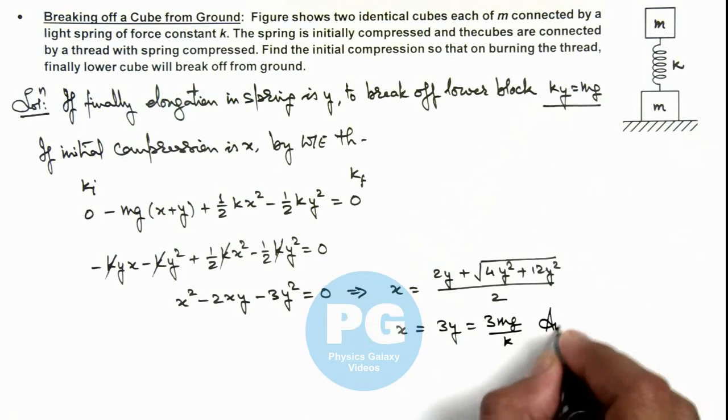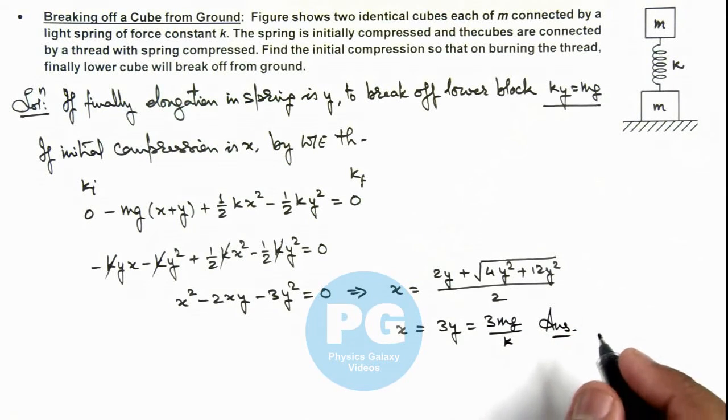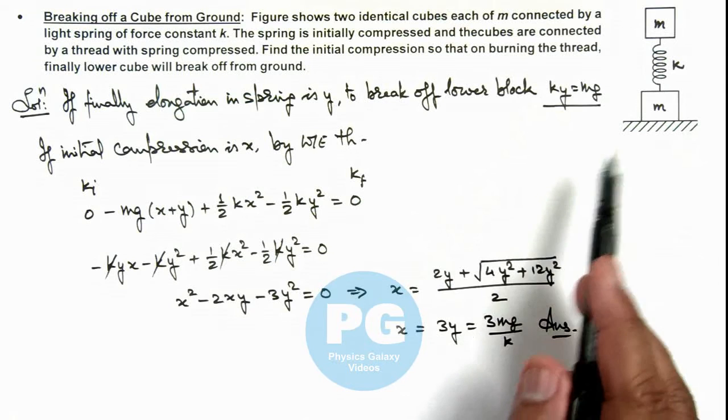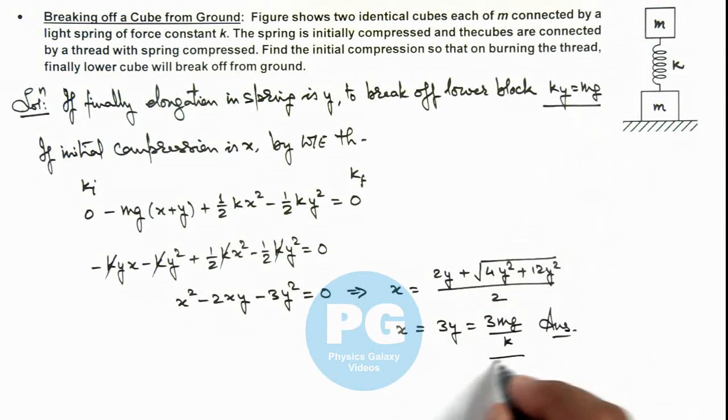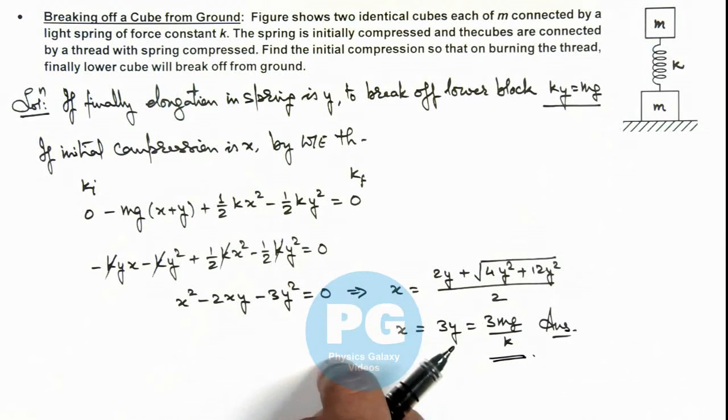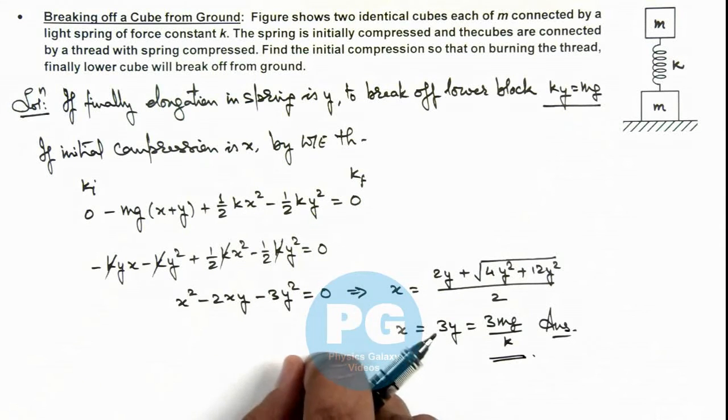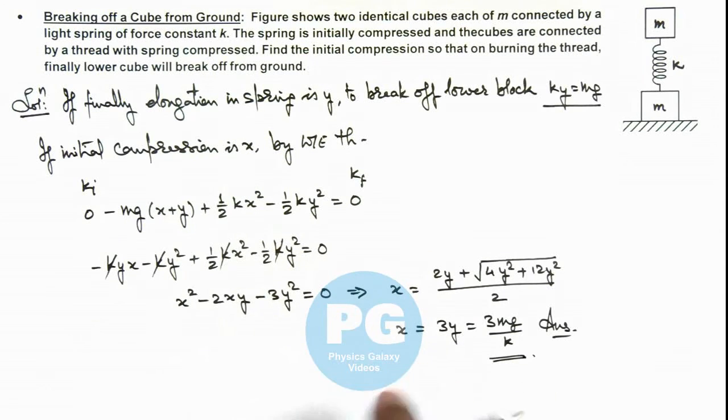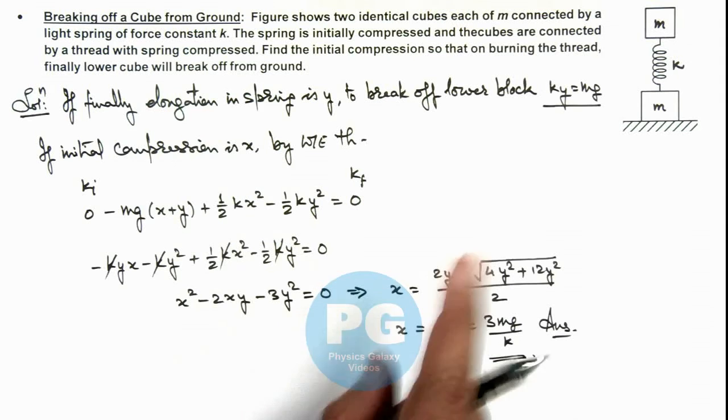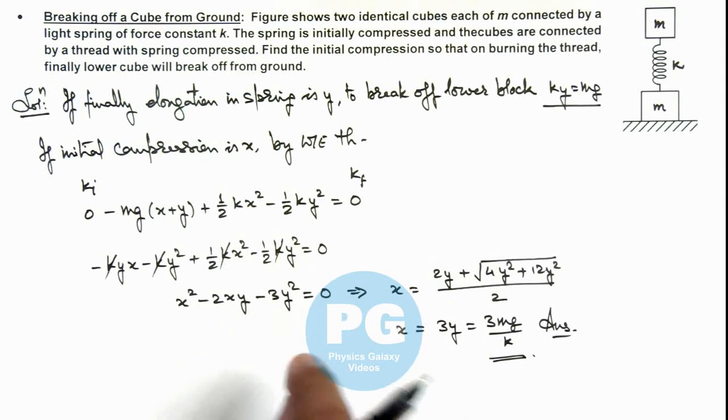That'll be the final result of the problem. Later when you'll study oscillations, then in case of simple harmonic motion, you'll be able to get this result directly without using work energy theorem. Right now, as the illustration is taken to explain work energy theorem, we are solving it by using this method. The same question you can find as an illustration in the topic of simple harmonic motion where directly it can be obtained.